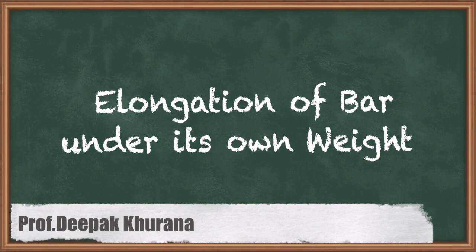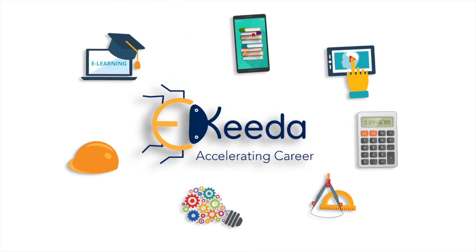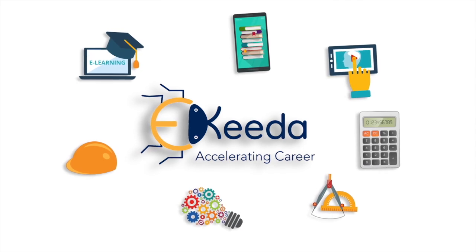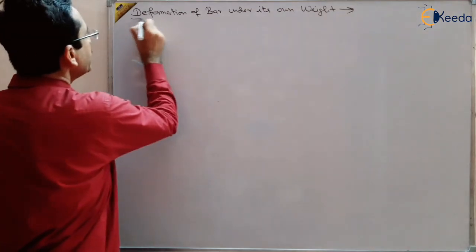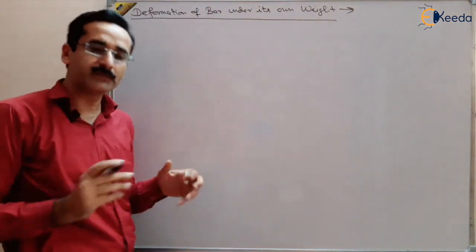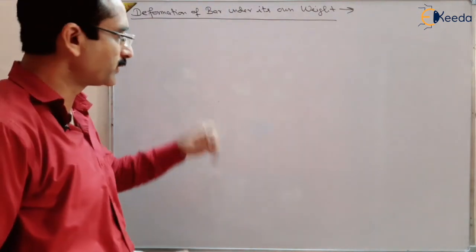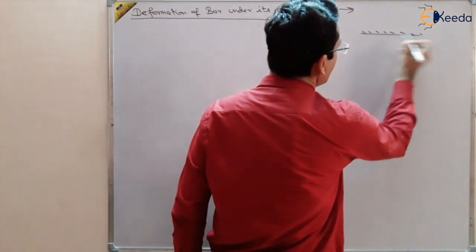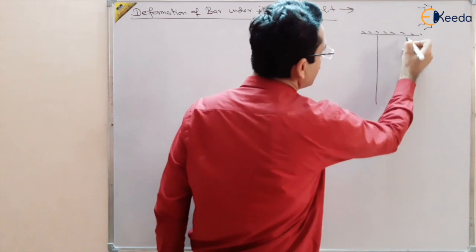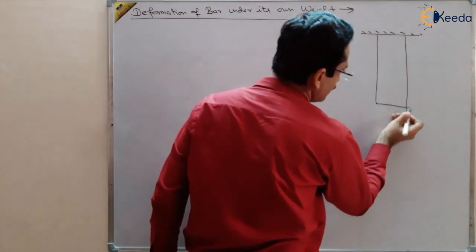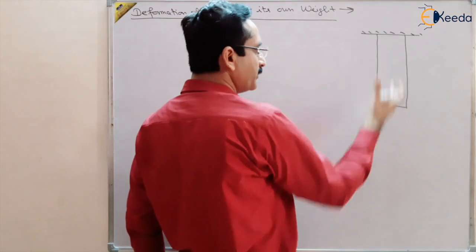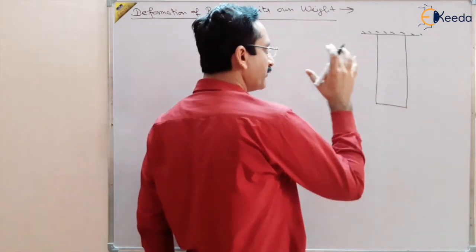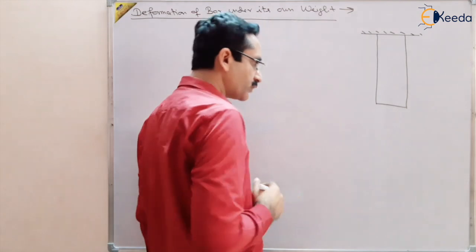Our next topic is finding the deformation of the bar under its own weight. It means we are not applying any external force on the body, but the weight of the body itself is causing deformation in the bar. Suppose this is a bar which is vertically hanging just due to its own weight — there will be some deformation in the bar and we want to find out that deformation. How to solve this problem?